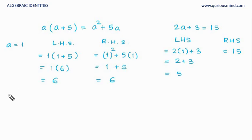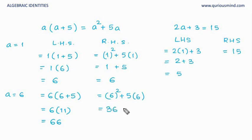What about a is equal to 6. Let's do this, LHS is equal to 6 into 6 plus 5 which is 6 into 11 and that's equal to 66. And RHS in this case is 6 square plus 5 into 6, 36 plus 30 and that is equal to 66. So, this one which we are calling as identity is valid even for a is equal to 6.